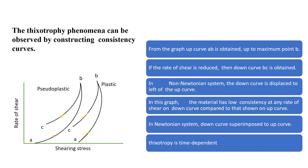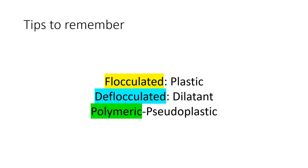A useful tip to remember examples: flocculated suspensions show plastic flow behavior, deflocculated suspensions show dilatant type, and polymeric suspensions show pseudo plastic behavior.